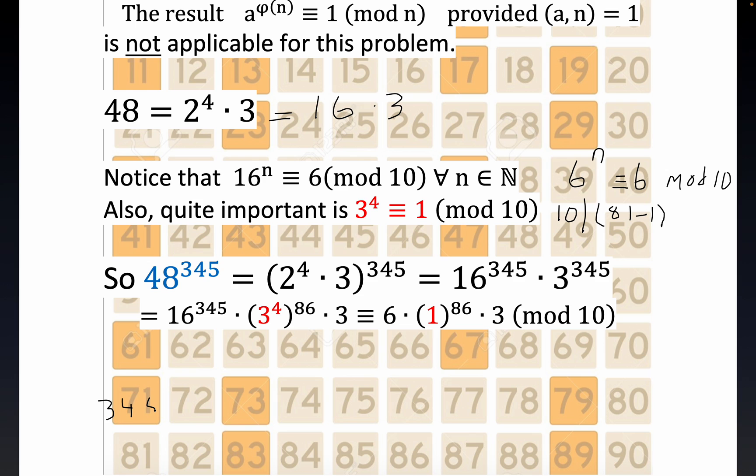345, when you divide it by 4 (which is important here - 4 is the exponent that gives us a nice representation of 1), 345 equals 4 times 86 plus 1. That's easy to do in your head: 4 times 86 is 320 plus 24, that's 344, and you add 1.